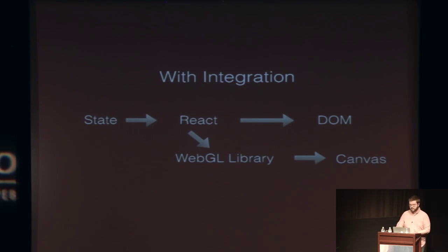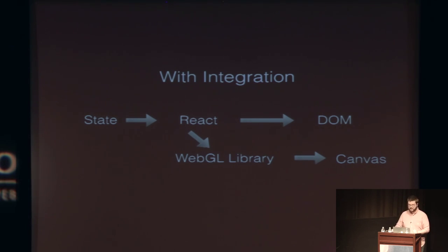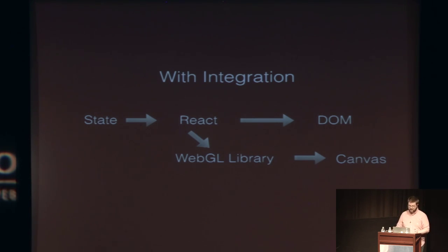It also runs into issues with the differences in how they batch. React by default uses setTimeout to batch updates, while WebGL runs much smoother batching on requestAnimationFrame, because that's the optimized point for pixel calculations. So you can run into slight timing issues and smoothness of animation issues occasionally.